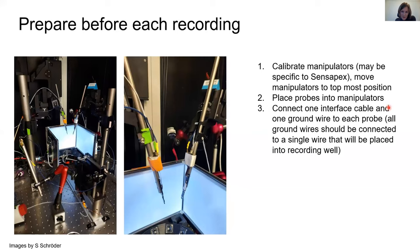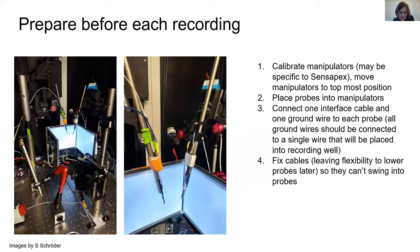Once you've done this, you connect one interface cable and one ground wire to each probe, but you have to make sure that all the ground wires are then connected to a single ground wire which is placed in the recording well. If you look very carefully here, the white cables are the interface cables, and the blue cable here is one ground wire of this probe, and we have a second blue ground wire for the second probe, and they all end up on this one cable and this one wire here, which is then put on top of the brain. You should also be careful to fix the cables, because if you leave these flexible cables just lying around, it's very likely that they actually swing into your probe.